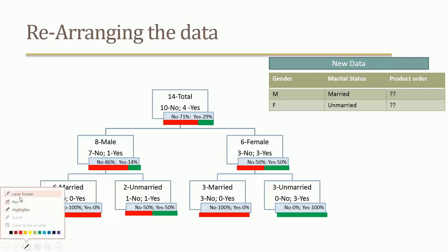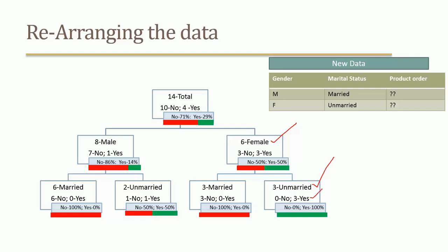To summarize: there are 6 female customers, 3 unmarried and 3 married. All 3 unmarried females ordered the product. There are 8 male customers, 6 of whom are married — and all 6 married males did not order. So if a customer is male and married, we can very confidently say they will not order. If female and unmarried, they will definitely order.